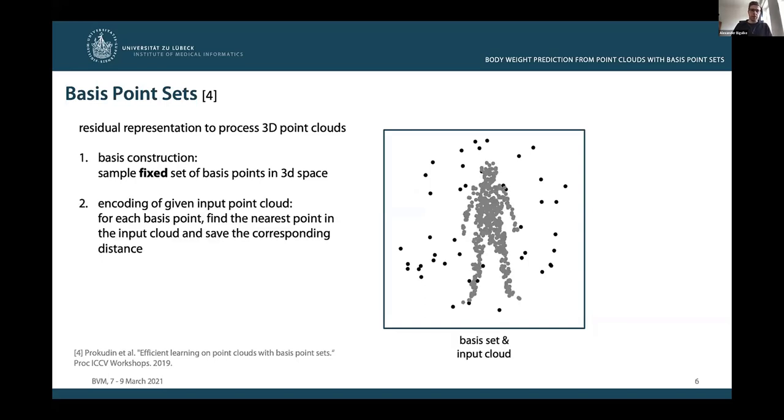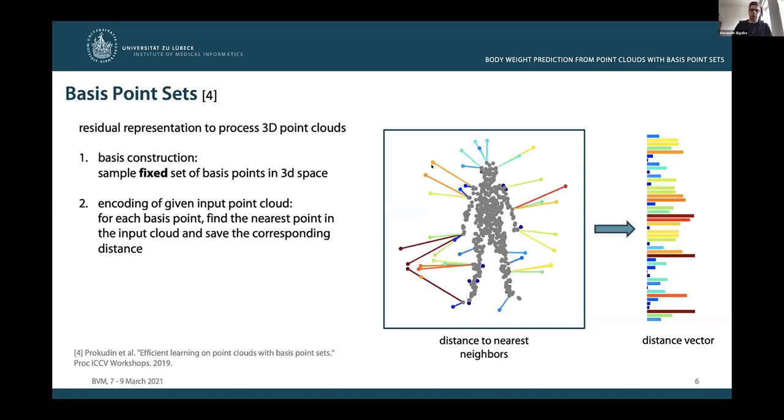Once we have constructed this basis point set, we can now encode a given input point cloud in step two as follows. For each of these basis points, we need to find the nearest point in the input point cloud and then save the corresponding distance between basis and input point in the distance vector, which can then be used for further processing. In our pipeline, for instance, this distance vector is forwarded by the neural network for weight regression.